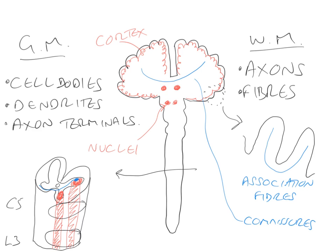The third main type of white matter in the central nervous system are the so-called projection fibres. What the projection fibres do is run longitudinally through the central nervous system. For example, thinking about a motor tract like the corticospinal tract, they might start out in the cortex, run down through the brainstem and go down into the spinal cord. So projection fibres run longitudinally, commissures run transversely, and association fibres run coronally through the central nervous system.